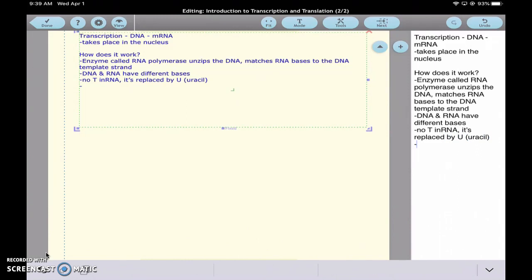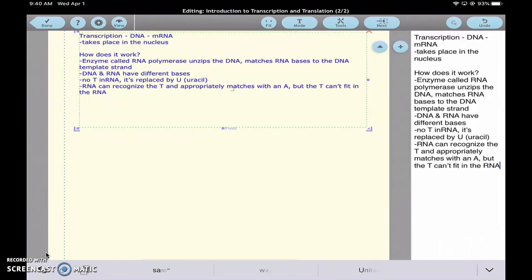An interesting thing about that, though, is that RNA can recognize the T and appropriately matches with an A, but the T can't fit in the RNA structure.